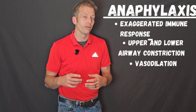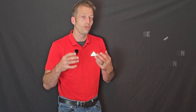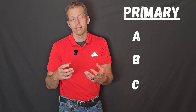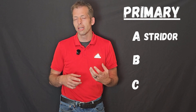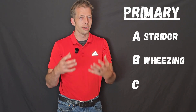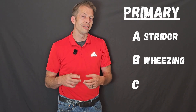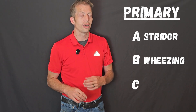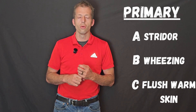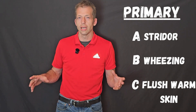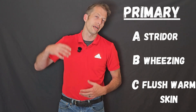Most of these signs and symptoms present during the primary assessment, and anything that affects the ABCs is potentially life threatening. When you assess the airway, you'll hear stridor from upper airway swelling. When you move to breathing, you'll initially hear expiratory wheezing, but as bronchial constriction continues, you'll hear both inspiratory and expiratory wheezing. The skin, unlike hypovolemic shock, is going to be flush — because in distributive shock all blood vessels are dilating, giving the skin extra blood.